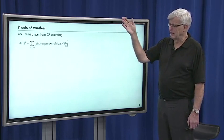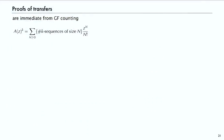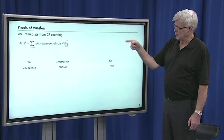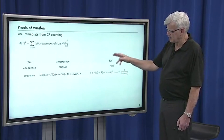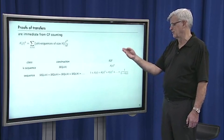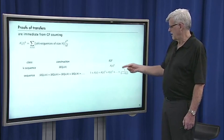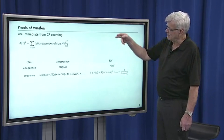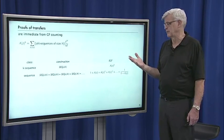That's the key operation; the others follow immediately from simple equations on the generating functions. For example, A(z) to the K — the number of K-sequences of size N, times z^N over N factorial. Just extending the product operation, that's the generating function for taking a sequence of K items from a class, which is A(z) to the Kth power. If you have a sequence of any length, then you sum over sizes zero, one, two and so forth, giving one over one minus A(z).